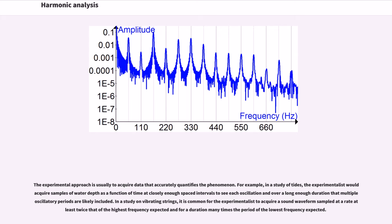The experimental approach is usually to acquire data that accurately quantifies the phenomenon. For example, in a study of tides, the experimentalist would acquire samples of water depth as a function of time at closely enough spaced intervals to see each oscillation and over a long enough duration that multiple oscillatory periods are likely included. In a study on vibrating strings, it is common for the experimentalist to acquire a sound waveform sampled at a rate at least twice that of the highest frequency expected.